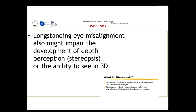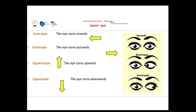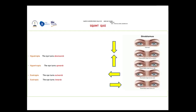Long-standing strabismus can also damage depth perception, or stereopsis — the ability to see in three dimensions. Depending on the direction of eye wandering, there are four types of misalignment: esotropia (eye turns inward), exotropia (eye turns outward), hypertropia (eye turns upward), and hypotropia (eye turns downward).